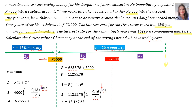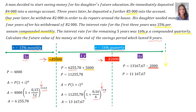Then we subtract the 2000 rand from the previous A. So our new P will be 13,167 rand minus 2,000, which is 11,167 rand and 67 cents. Enter the formula: A equals P bracket one plus I to the N. In P's place, 11,167 — and you include the cents as well. R is still 16%, 0.16, divided quarterly, divided by 4. And then all of this is going on for four years times 4, compounded quarterly. When you slot that into your calculator, the final amount will be 20,916 rand and 84 cents.